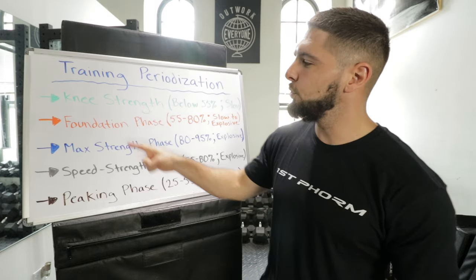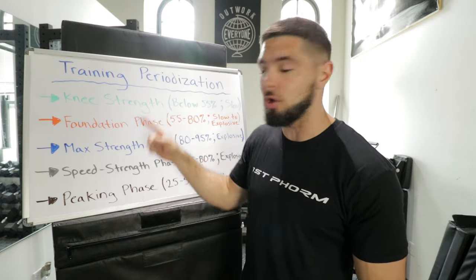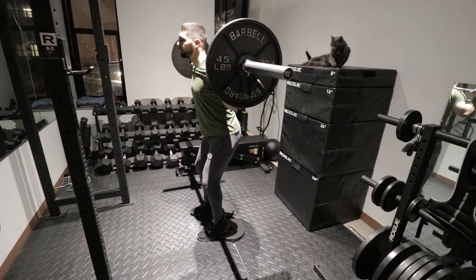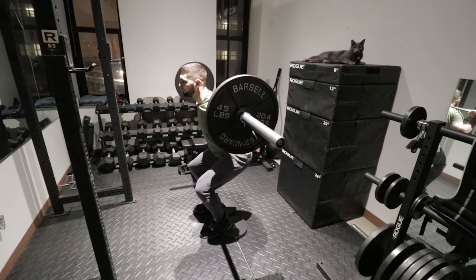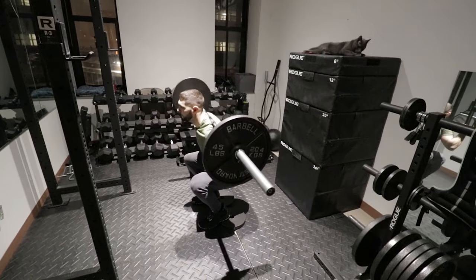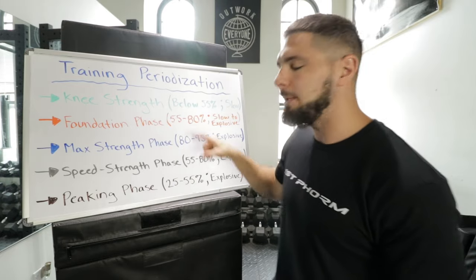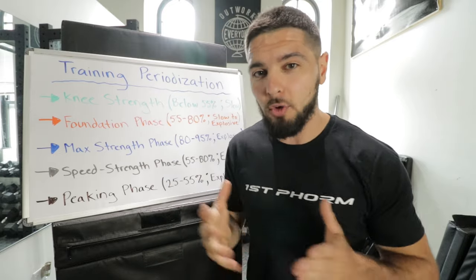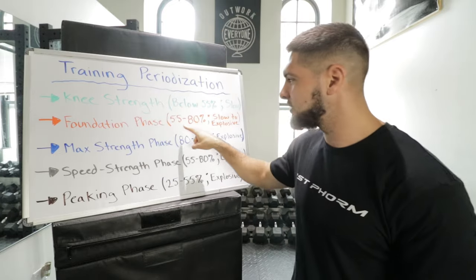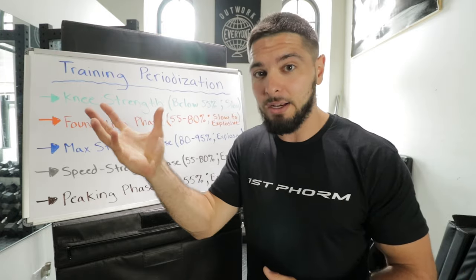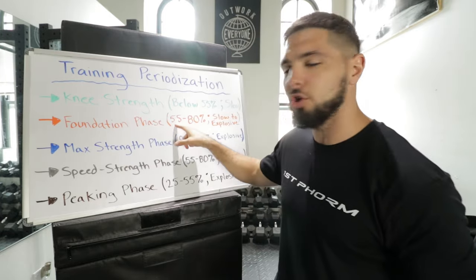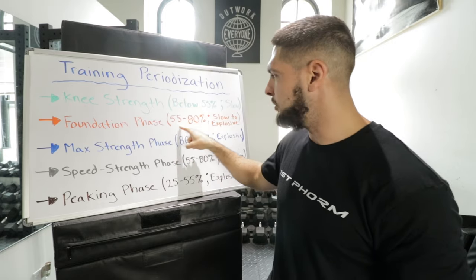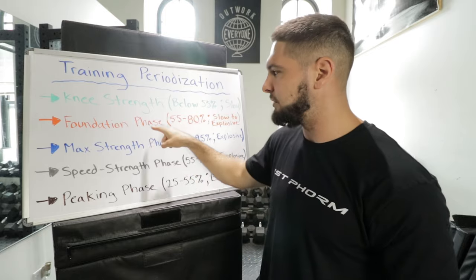The next phase is the foundation phase. Once your knees are strong, we go through a foundation phase to get your knees and muscles strong enough for the heavy loads in the max strength phase. This uses 55 to 80% of your one rep max. To think about it simply: figure out the most weight you can squat for one rep — that's your one rep max for squat — then take 55% of that for your sets and reps, progressing up to 80% as you move through the foundation phase.